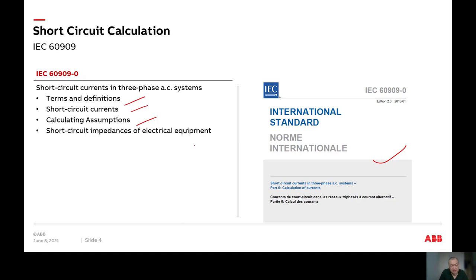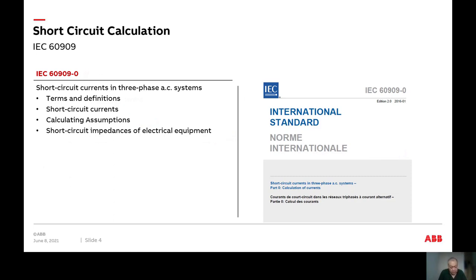Factors like cable sizing, cable length, and installation method all affect things. For example, country to country the installation method could be different — some use cable ladders, some use cable trays — and these affect the current carrying capacity of cables. The standard also covers the short circuit impedance of electrical equipment like transformers, utilities, cables, and so forth.